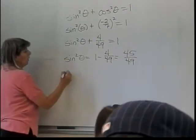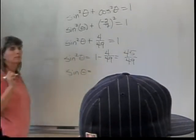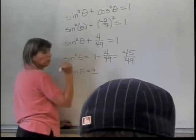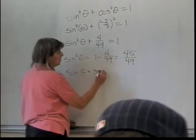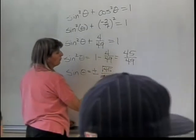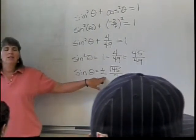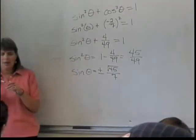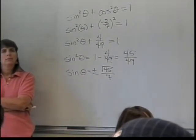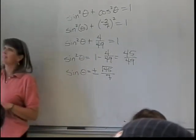Alright, so then what is sine of theta? Plus or minus - whenever I take the square root of both sides of an equation I have to remember the plus or minus. So the square root of 45 over the square root of 49 which is just 7. Which one is it? Is it the positive one or the negative one? And how do I know? What's less than 0? The tangent is less than 0.